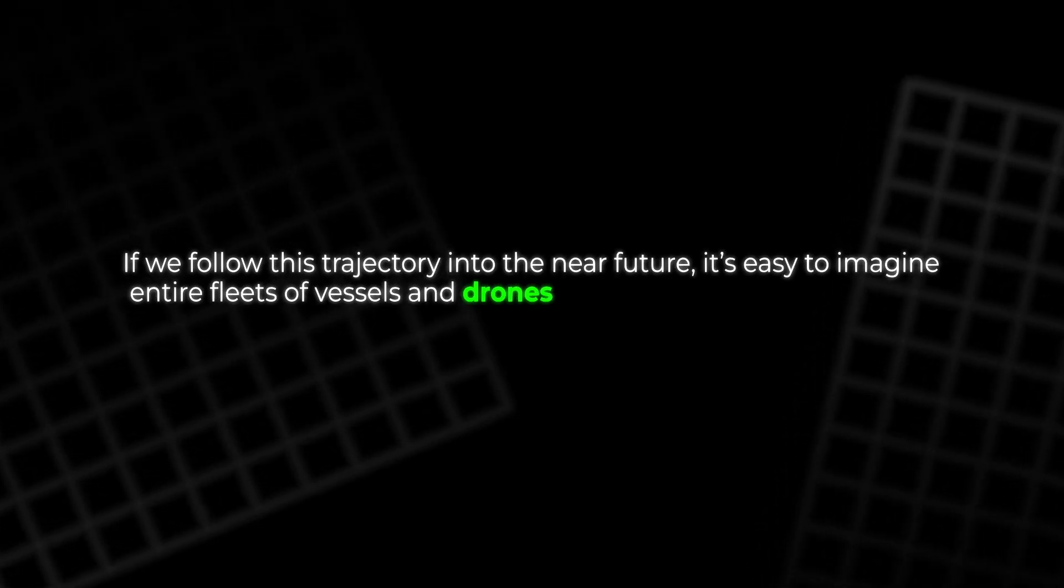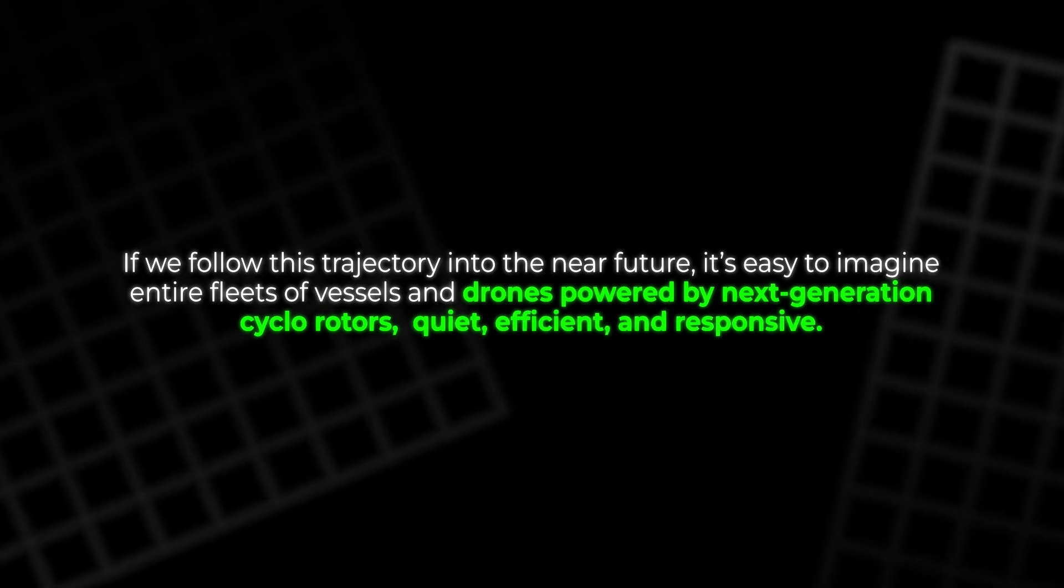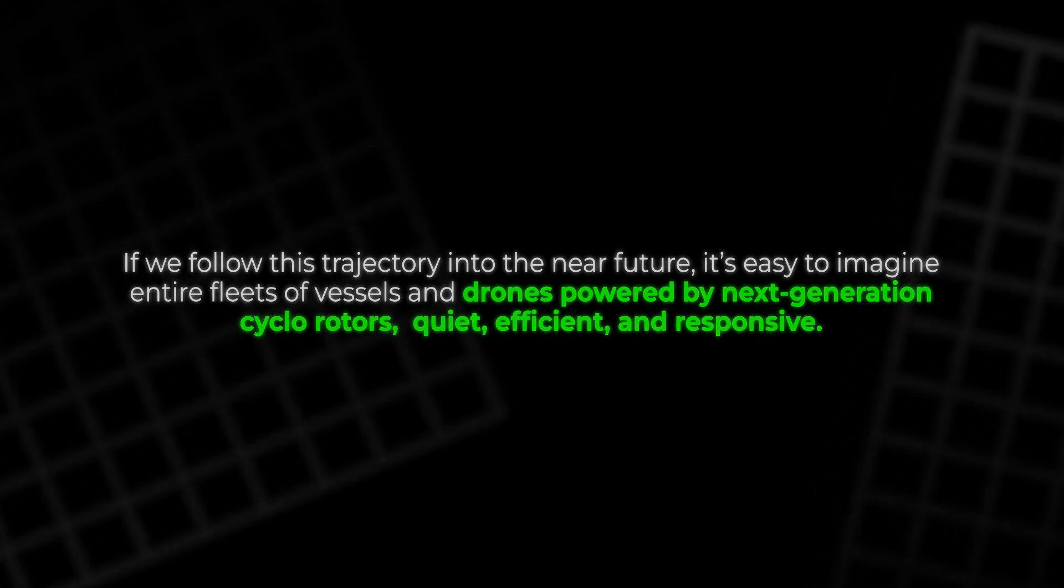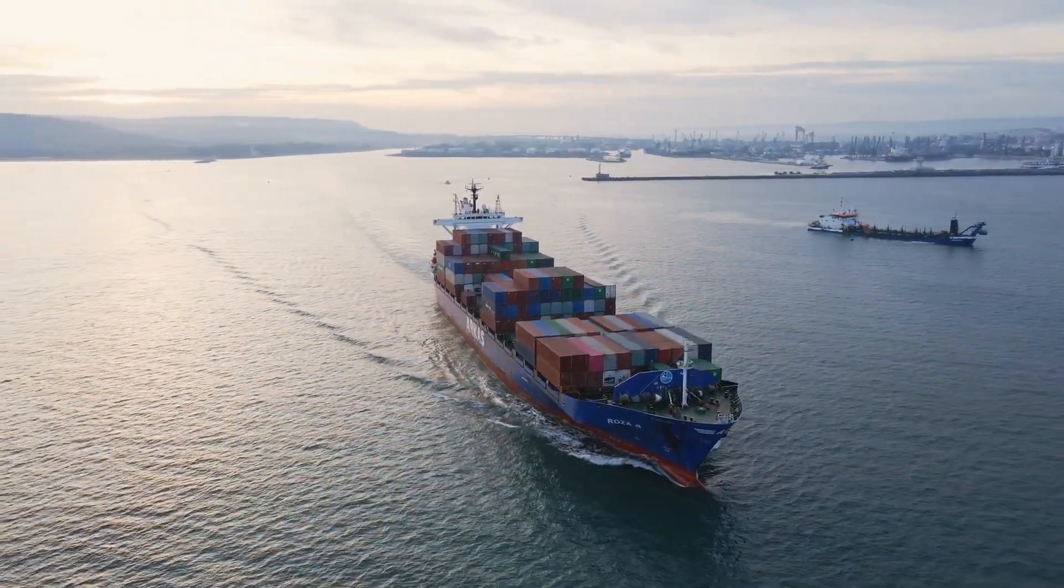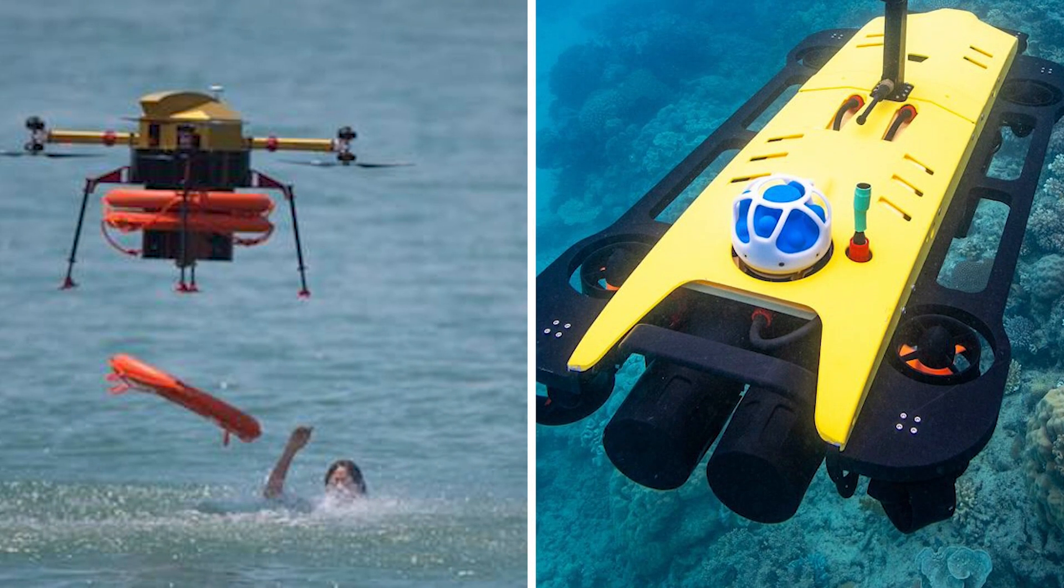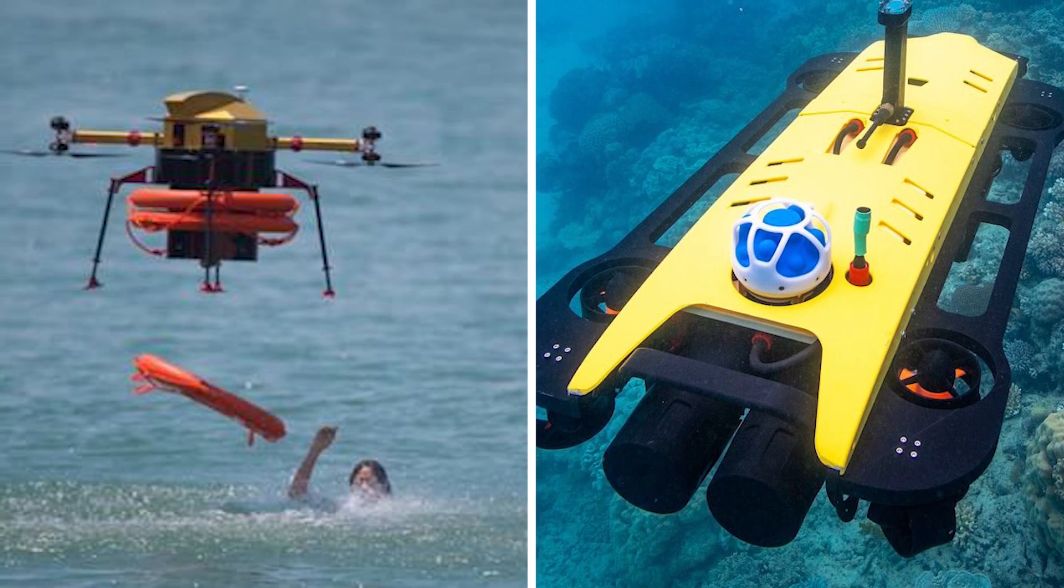If we follow this trajectory into the near future, it's easy to imagine entire fleets of vessels and drones powered by next-generation cyclorotors: quiet, efficient, and responsive. These systems could enable cargo ships that glide silently through ports, rescue drones that hover precisely in storms, and autonomous underwater vehicles that can turn on a dime.